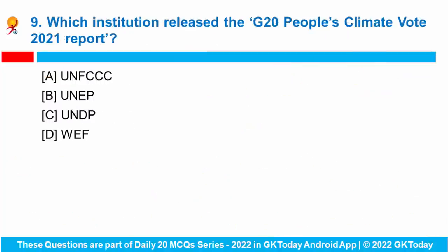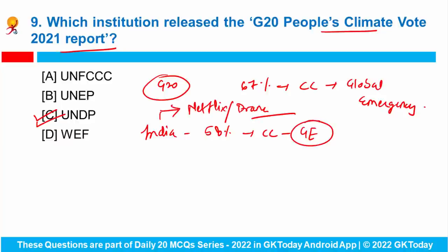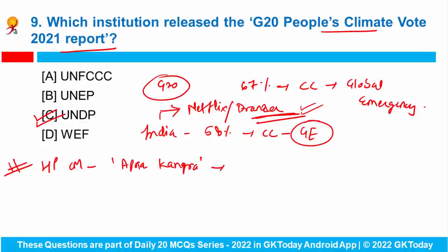Question number nine: the G20 People's Climate Vote 2021 report was released by the United Nations Development Programme. According to it, around 67% of the youth in India consider the climate crisis as a global emergency. The youth are vocal about the need for urgent policy creation and change, whereas only about 58% of Indian adults consider climate change a global emergency. Himachal Pradesh Chief Minister Jairam Thakur has launched the Apna Kangra application to help tourists and boost the sale of local handicrafts through an e-marketing platform.